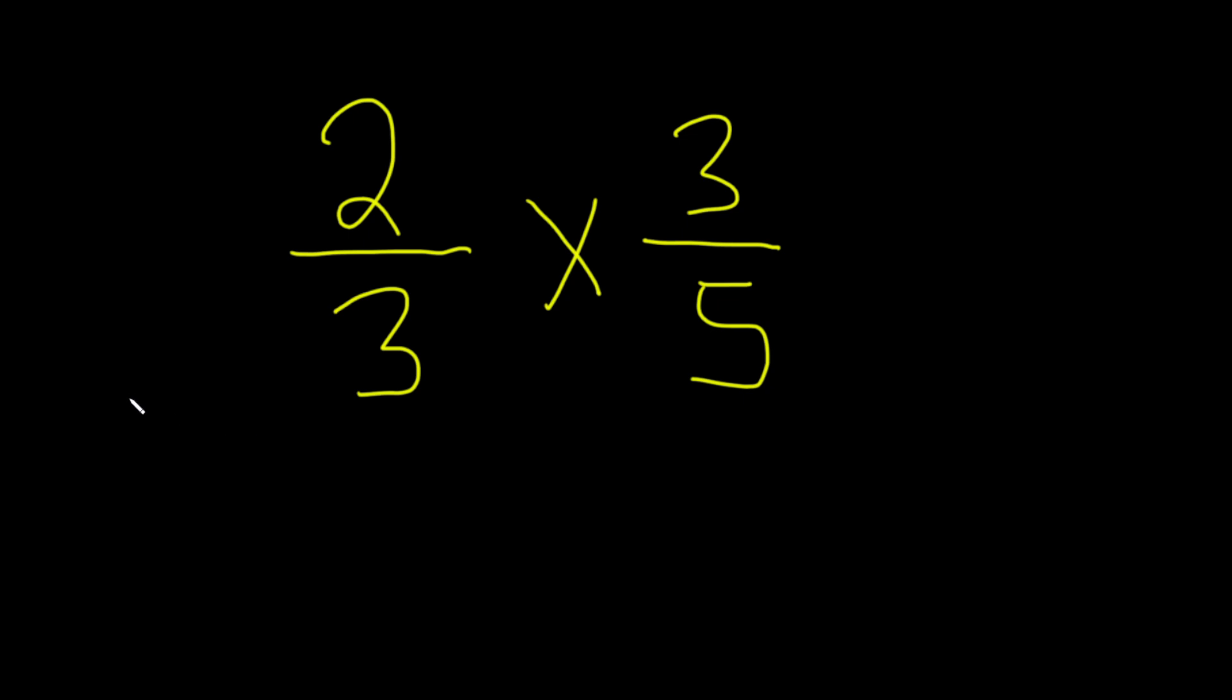Solution one is we're going to cancel when possible. You can cancel things that are on the top and on the bottom. For example, there's a 3 here on the bottom. There's a 3 on the top. So these go away and they just become 1s. Then you can multiply straight across. 2 times 1 is 2. 1 times 5 is 5. The answer is 2 over 5. That's one way to do it. Again, you cancel the 3s. 2 times 1 is 2. 1 times 5 is 5. That works.